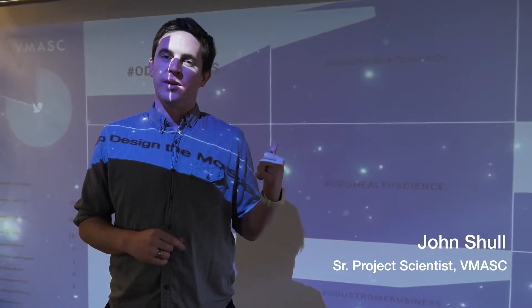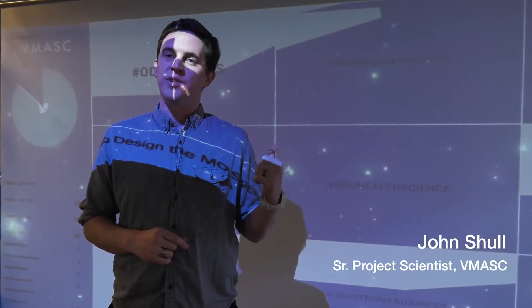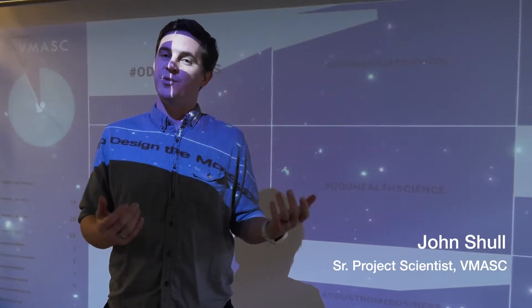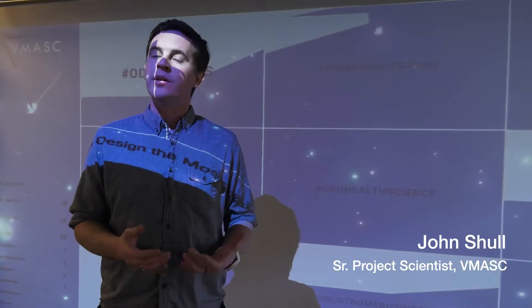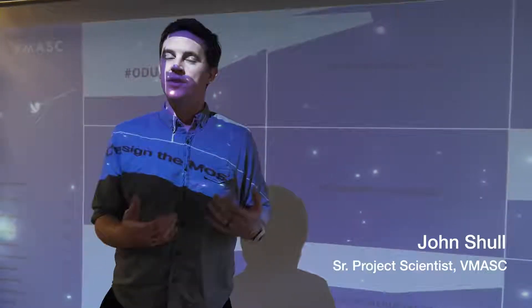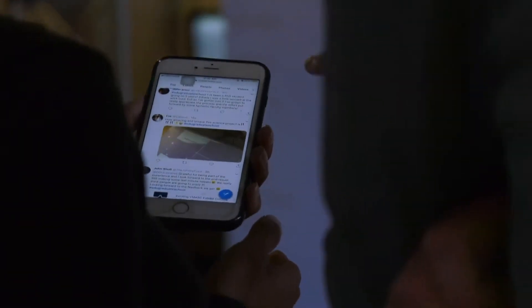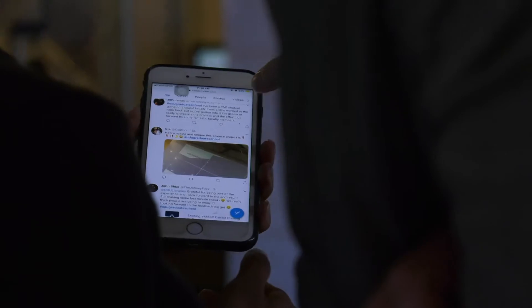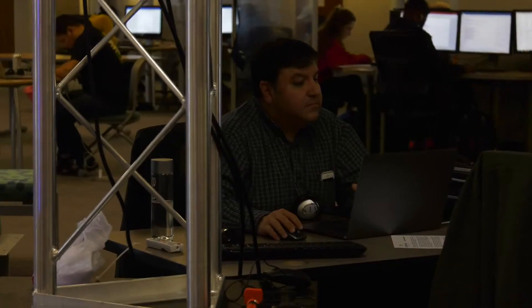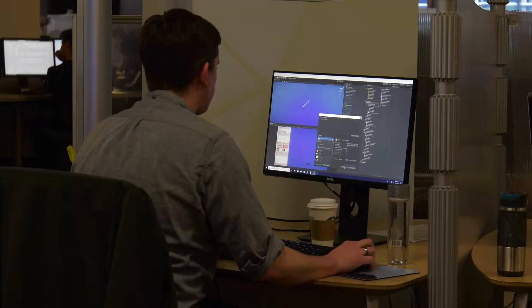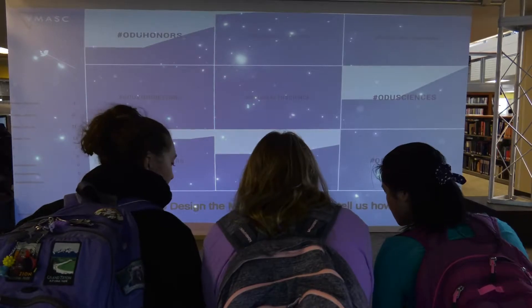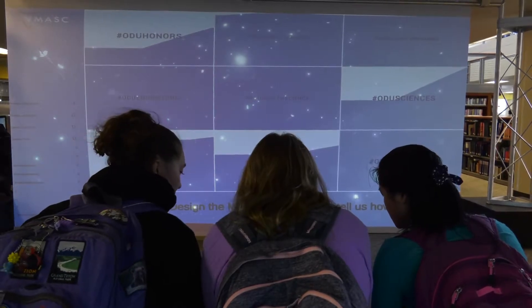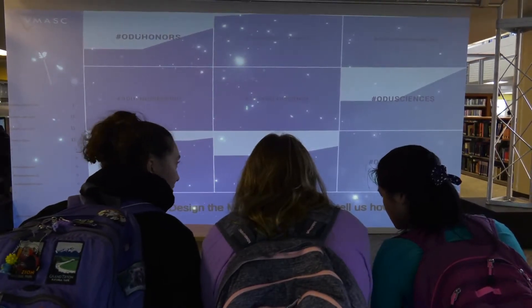Behind me on this wall, we worked on a data visualization using social media — we specifically picked Twitter. The way it works is you send a tweet to any one of these nine hashtags, and then we're processing that tweet for its semantic analysis. We send that off to IBM — IBM Watson's helping out with that.